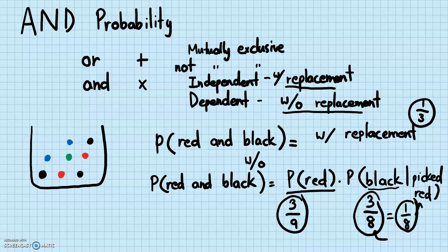You can see how not replacing the marble affects the second pick, which makes sense — there's one less marble in the bag. For AND probability, you are basically multiplying the two probabilities, but depending on whether it's an independent or dependent event, you need to adjust your second probability so that it reflects the actual situation.